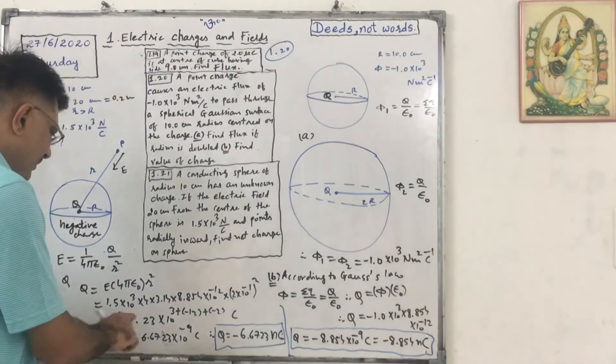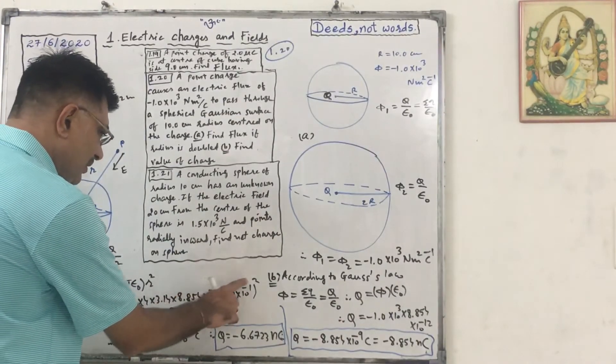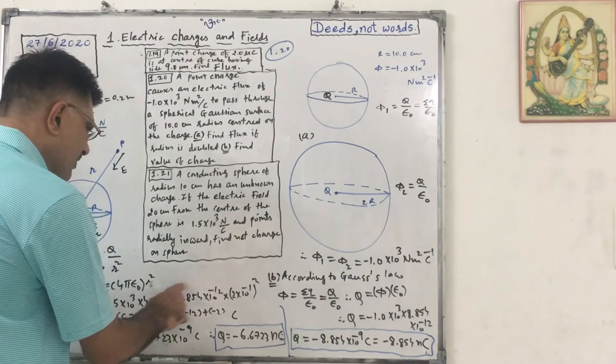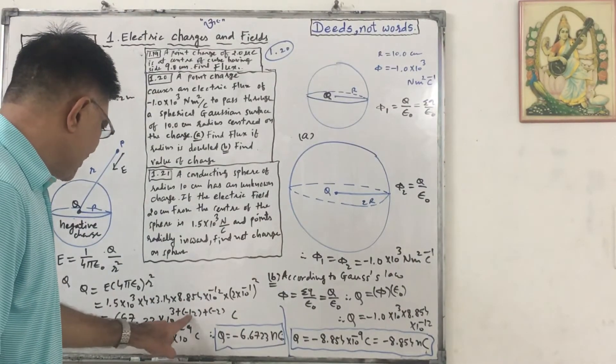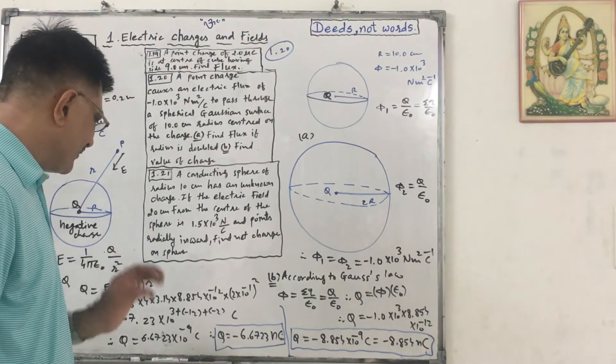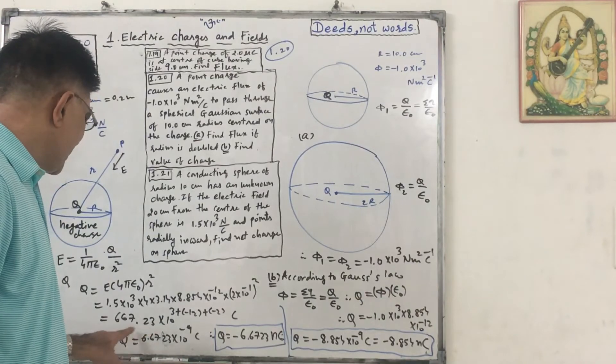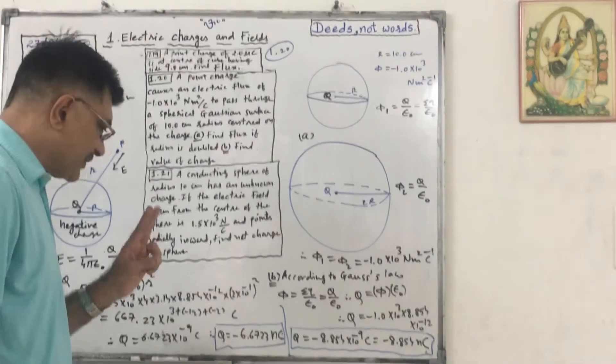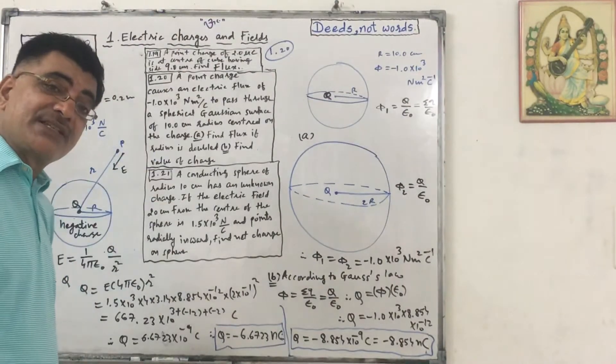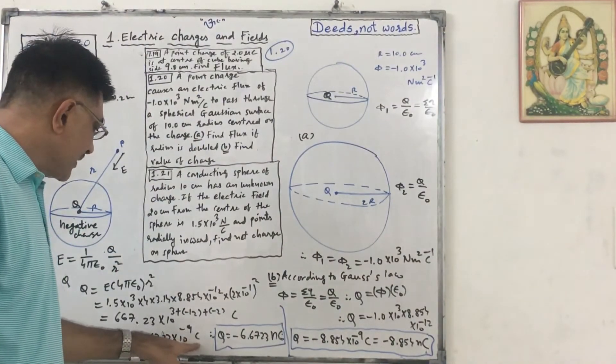So it will become 667.23 into 10 raised to 3 minus 12, actually 3 plus minus 12 plus minus 2. This becomes 3 minus 14, that is 10 raised to minus 11. This product is 667.23, we can write 6.6723 into, we have 2 powers to add, 10 raised to minus 11, so 10 raised to minus 11 plus 2, that is 10 raised to minus 9 coulomb.